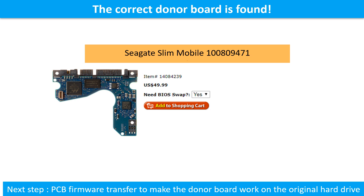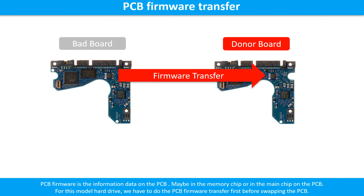We found the correct donor PCB board for the hard drive, but this is only the first step. The next step is we have to do the PCB board firmware transfer to make the donor board work on the original hard drive. For this model hard drive, we have to do the PCB board firmware transfer first, then swap the PCB board. Otherwise, the new board will not work on the original hard drive.